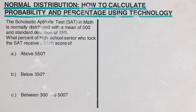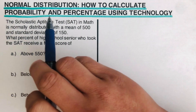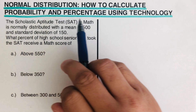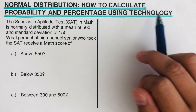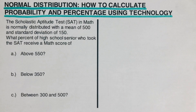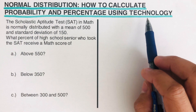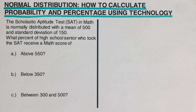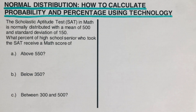Hello everyone. In this video we're going to use the normal distribution, or the bell curve, to calculate probability and percentage using technology. The tools we're going to use today are an applet and a scientific calculator. I will put the link to the applet in the description box below. Before we take the first example, let's have a review of the normal curve.